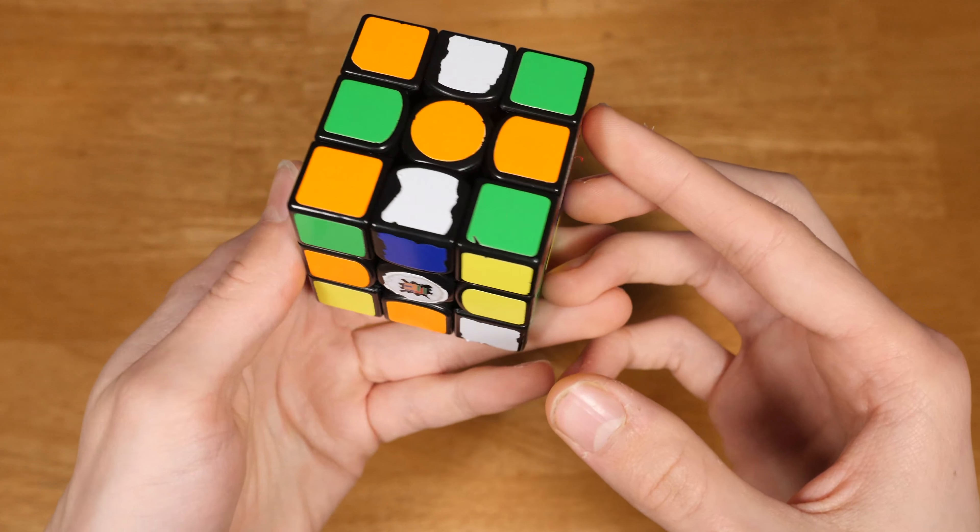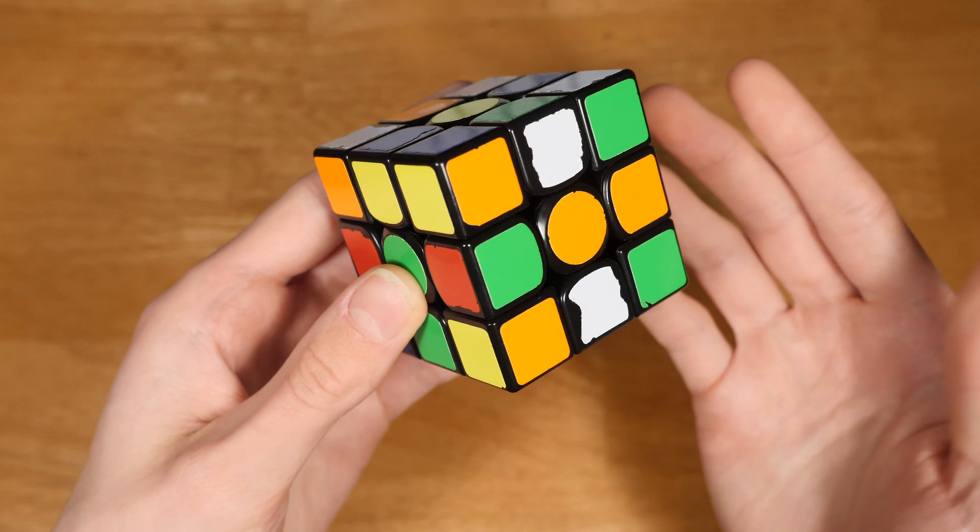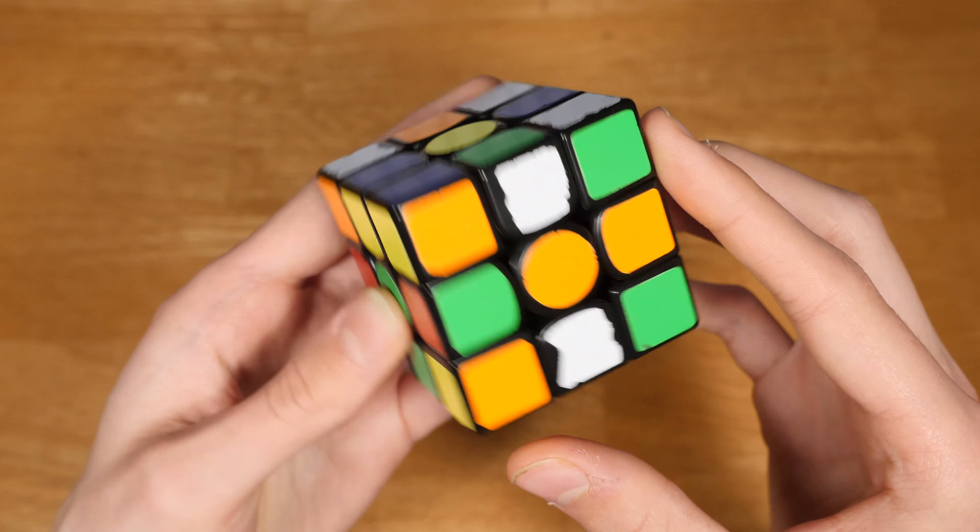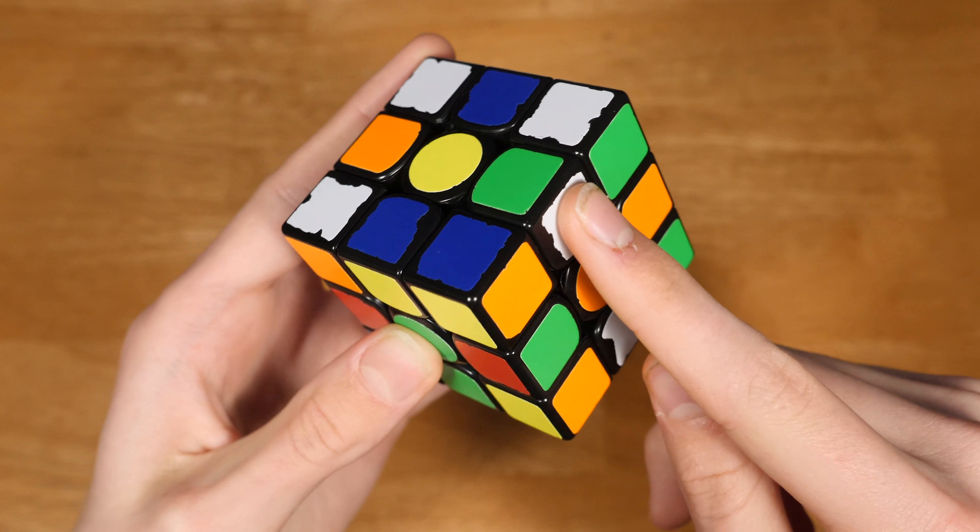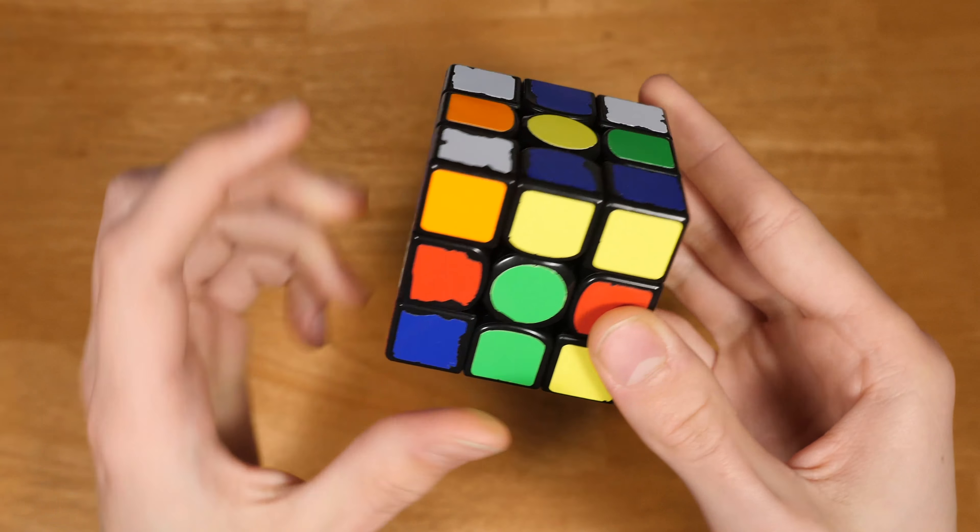He starts off with a white cross, so for all you white cross solvers this should be pretty easy to follow. The cross pieces are here, here, here, and here.